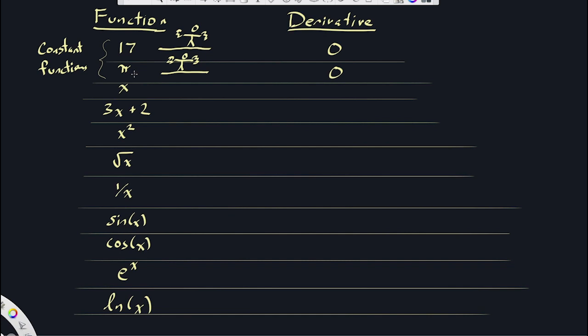The pi throws some people off because pi looks a little different than 17. But pi is still a constant. So is e. So is e to the square root of pi. All sorts of things are constants — they can just look a little complicated.